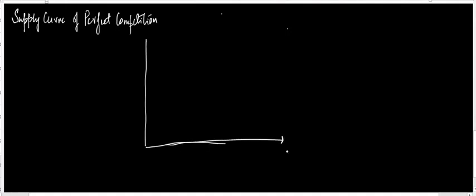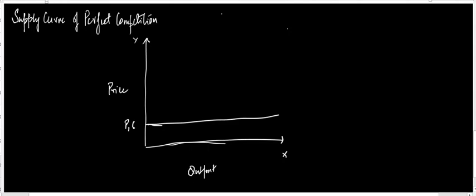Let me talk about one of the interesting features — the supply curve of perfect competition. I'll plot the quantity of output on the x-axis and the price on the y-axis. Say for example price P1 equals 2, with demand D1 demanded in the perfect competitive market, and the firm is looking to supply quantity Q1.